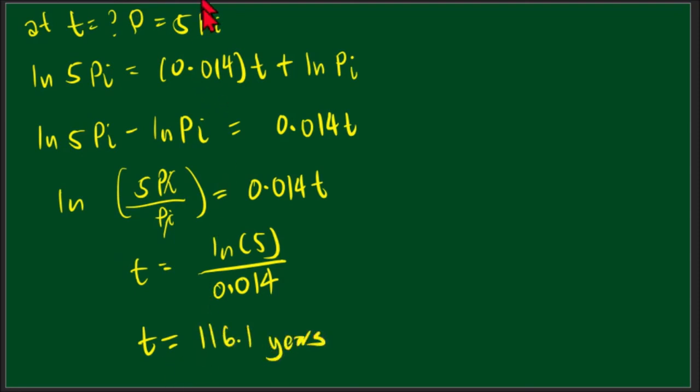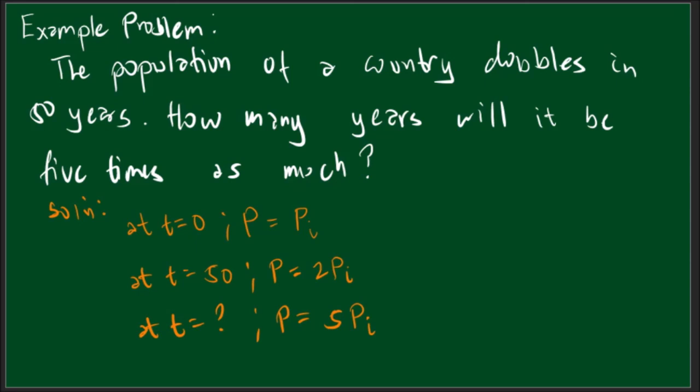So after 116.1 years, the population will be 5 times as much as it was on the initial year or year zero. So I hope you understand something in our discussion. Thank you for watching this video. And as always, enjoy learning.